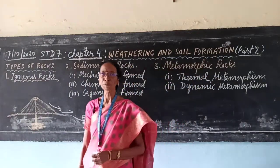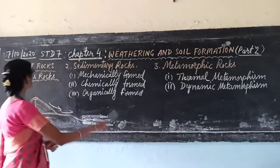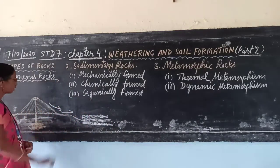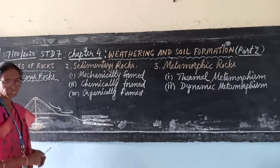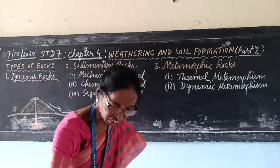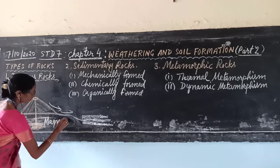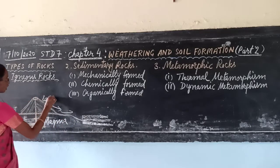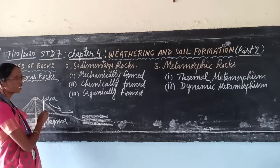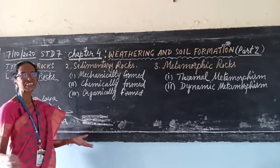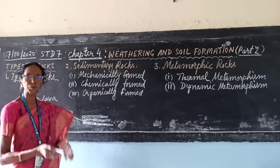How are the sedimentary rocks formed? You have studied about the igneous rocks. First of all, igneous rocks are formed due to the cooling and solidification of hot magma. Cooling and solidification of hot magma on the earth's surface as lava gives igneous rocks. And when the igneous rocks are disintegrated, the rocks can be changed into small particles, smaller and smaller particles.